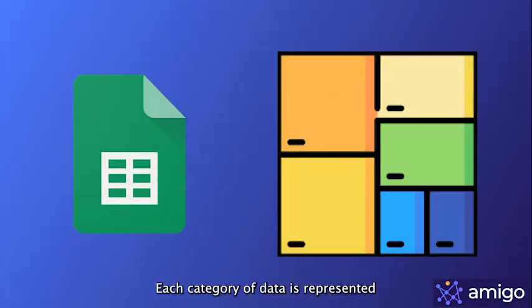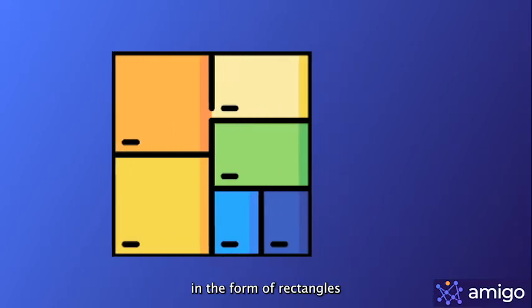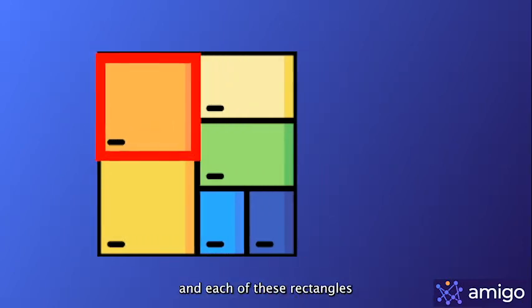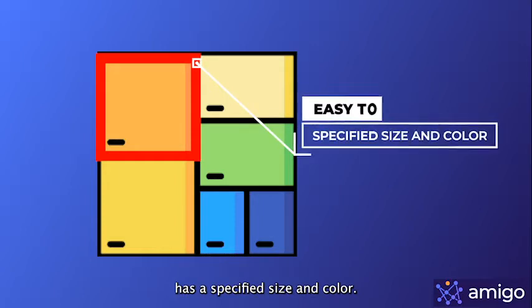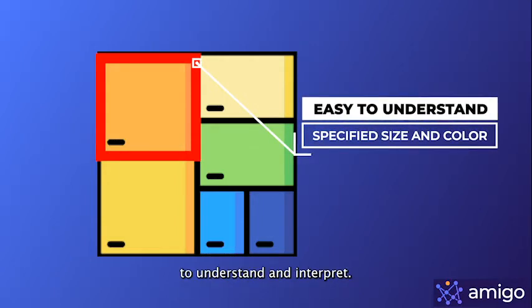Each category of data is represented in the form of rectangles in tree map charts, and each of these rectangles has a specified size and color. This makes the data easier to understand and interpret.